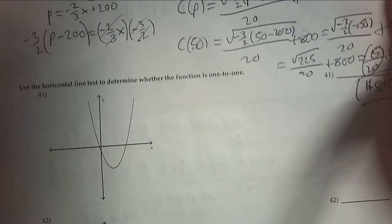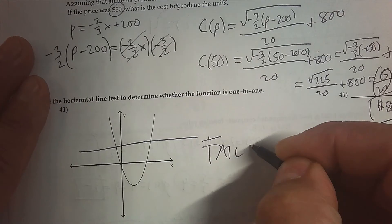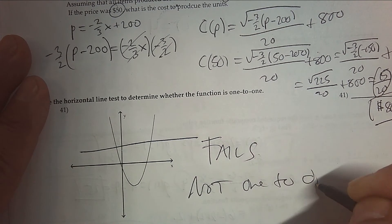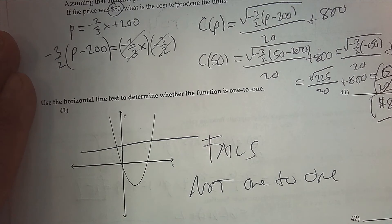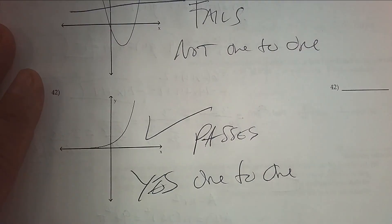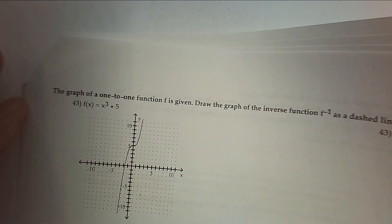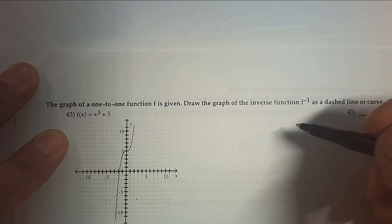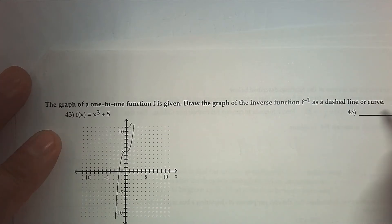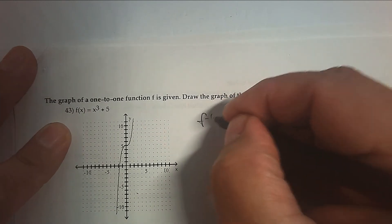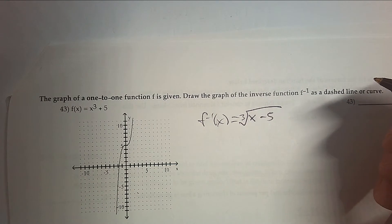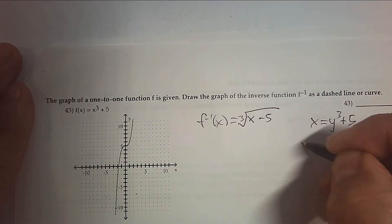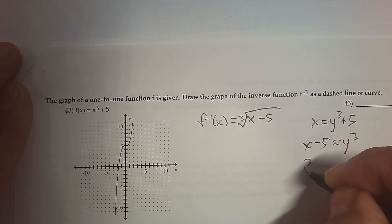Use the horizontal line test — is it 1-to-1? This one fails. This one passes. The graph of a 1-to-1 function is given — draw the graph of the inverse as a dashed line or curve. The inverse of this would be to subtract 5 and then do the cube root.